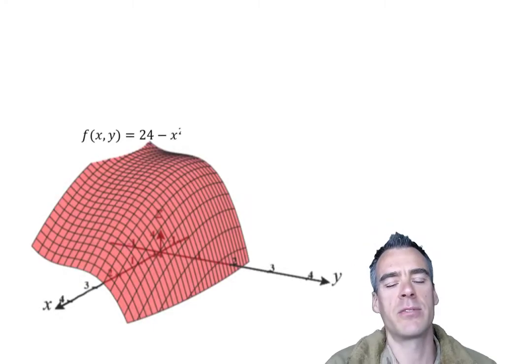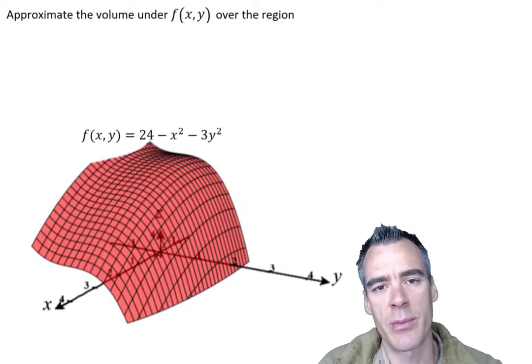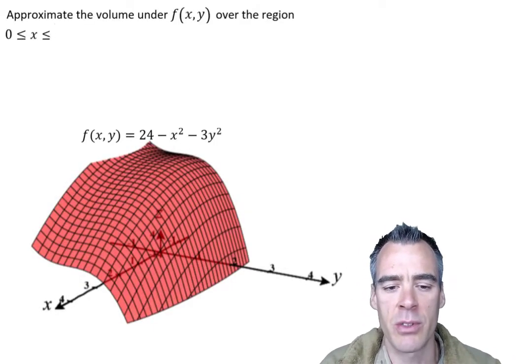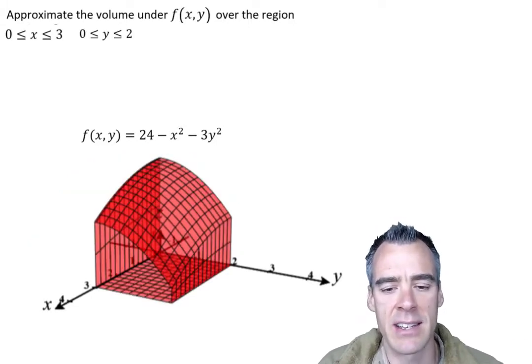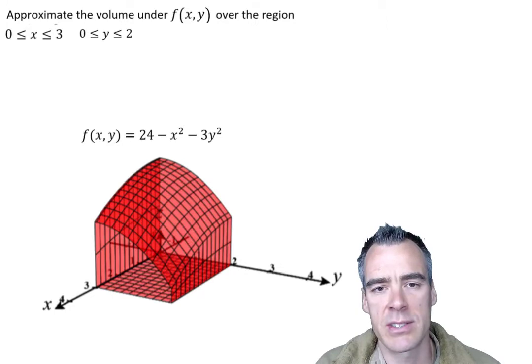Imagine we have the surface in 3 space, Z equals 24 minus X squared minus 3Y squared, and we want to find the volume under this surface over the particular region where X is between 0 and 3, and Y is between 0 and 2, where this exact chunk of material looks something like this.